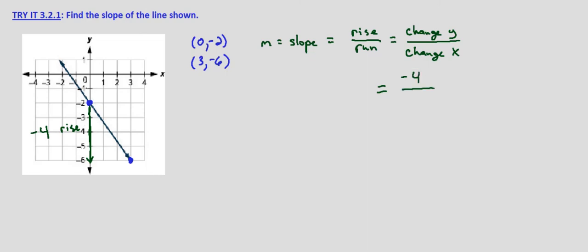Now what's the change in x? We're going from x equals 0 to x equals 3. So our run is going to be from 0 to 3, and that's going to equal 3, 3 minus 0.